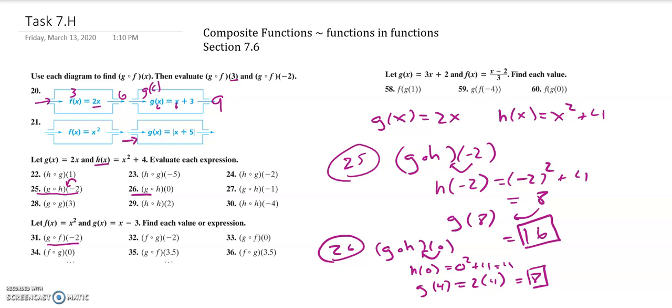All right. So, to do the rest of these problems over here, just be mindful of what you're plugging and chugging. Look at number 29. I'm going to take 2 and I'm going to go into h. That means I'm going to go into x squared plus 4. Get an answer. Right? I think that's going to be 8.